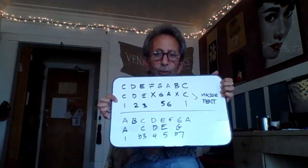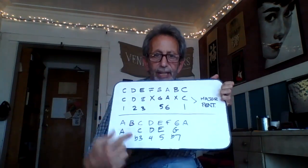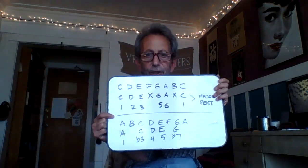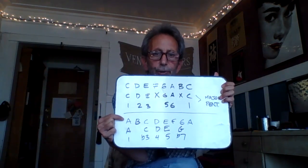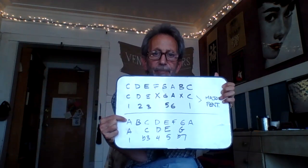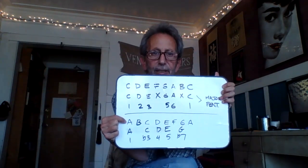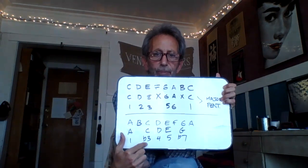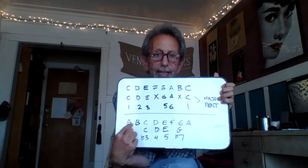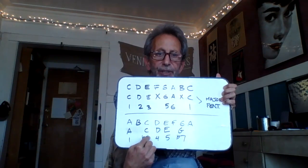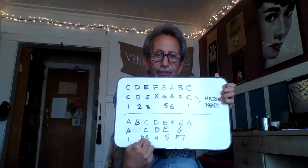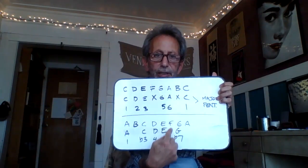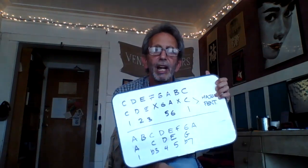You might ask why flat 3 and flat 7 when you don't actually see a flat in the notes themselves. When making comparisons about the numbering of a scale, you take the root note and compare it to a major scale on that root. The A major scale goes A, B, C sharp — so compared to C sharp, the C natural is a flat third. Similarly, A major has G sharp, but we have G natural here, so we call it a flatted seventh.